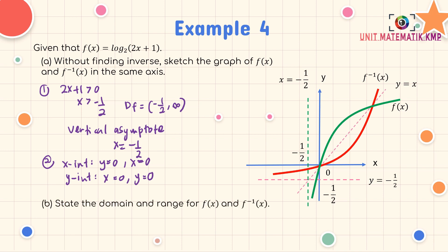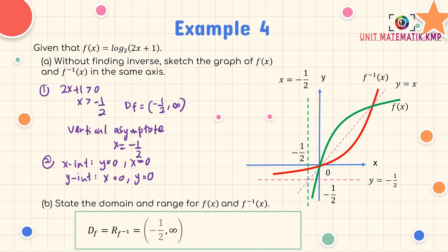Part B: state the domain and range for f(x) and f⁻¹(x). Domain of f is −1/2 to infinity. Range of f equals domain of f⁻¹, which is all real numbers from negative infinity to infinity.